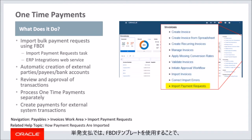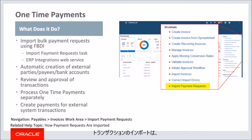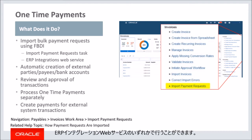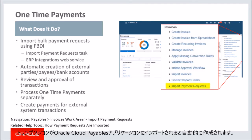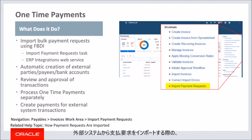One-time payments allows you to import transactions from external sources as payment requests into Oracle Cloud Payables using the FBDI template. Importing the transactions can be done in one of two ways: the task import payment requests from the invoice work area, or the ERP integrations web service. The payees and their bank accounts, if any, are created automatically when transactions are imported into the Oracle Cloud Payables application. This eliminates the need for any manual tasks by users when importing payment requests from the external systems.